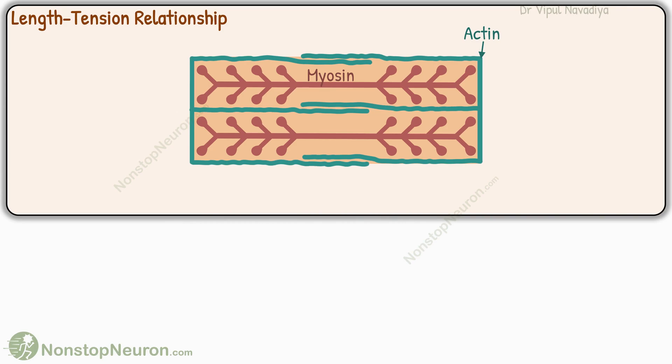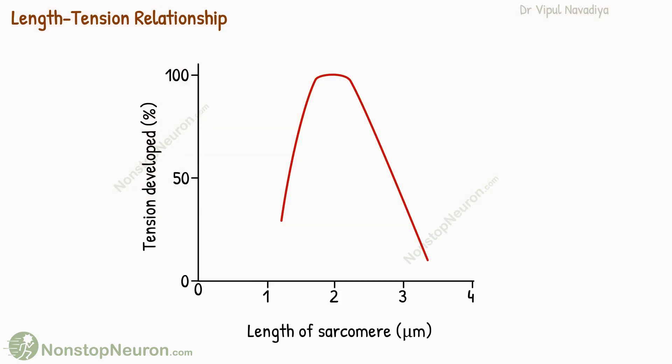Thus, starting from the highest length with a decrease in length, the force of contraction initially increases and then decreases. And that's why we get such a curve when we plot tension against length.